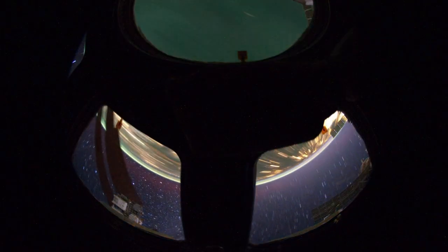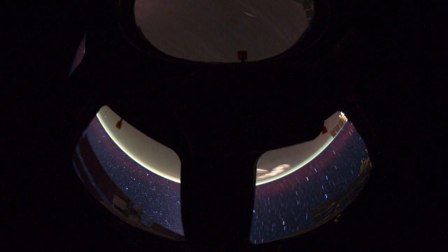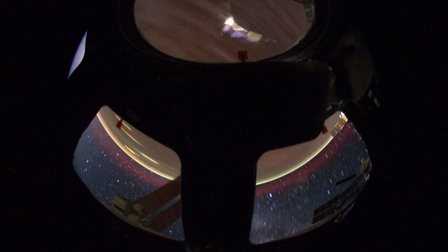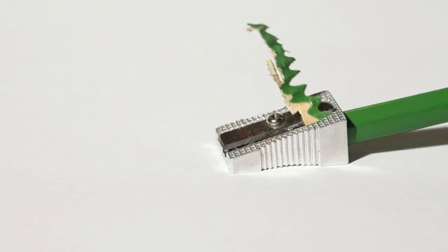But when its star began to die and expanded into a red giant, Kepler-70b was pulled into the growing inferno. The giant star's outer layers engulfed the planet, stripping away its gas envelope and leaving behind only the solid, molten core.